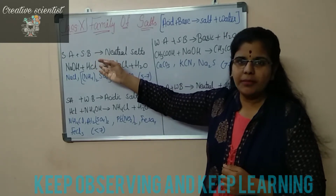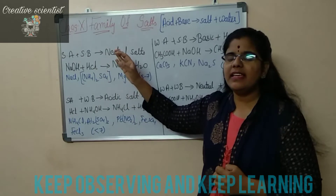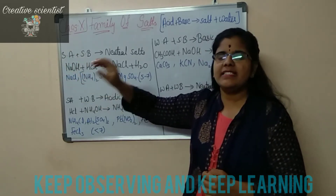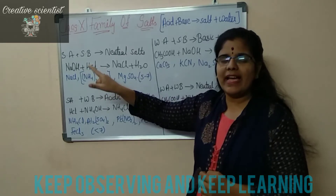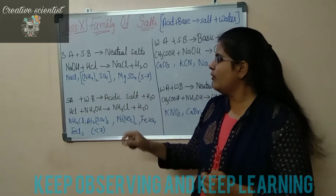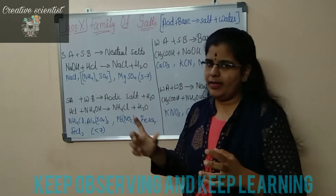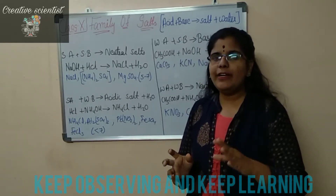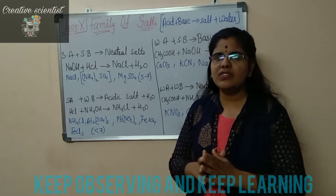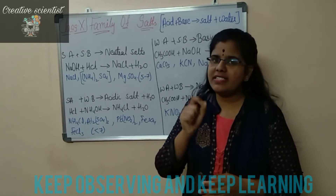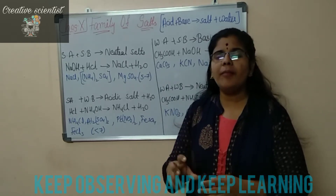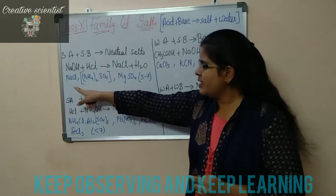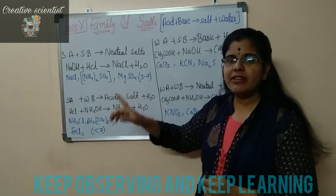First is strong acid and a strong base. When a strong acid and a strong base react, they give out neutral salts and water. For example, sodium hydroxide is a strong base. When it reacts with hydrochloric acid, which is a strong acid, they give out the neutral salt sodium chloride and water. The pH of neutral salts ranges from 5 to 7. These neutral salts will not conduct electricity in solid state, but they do conduct electricity when in solution form.